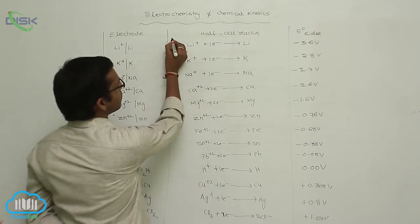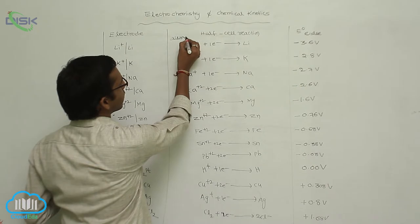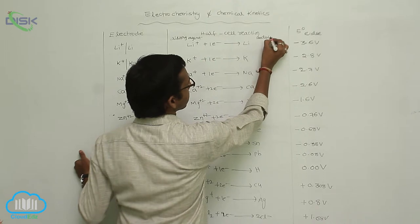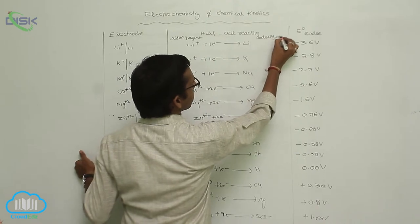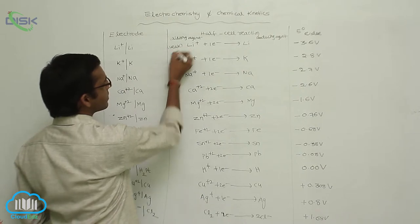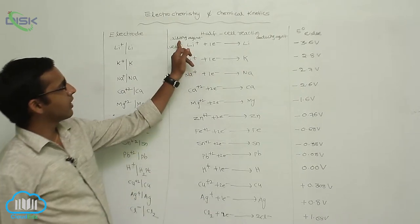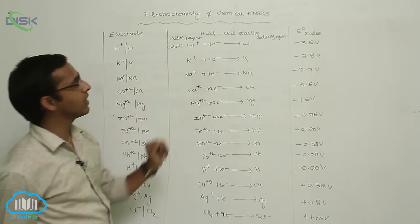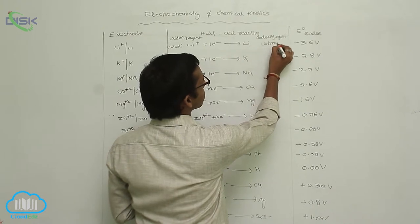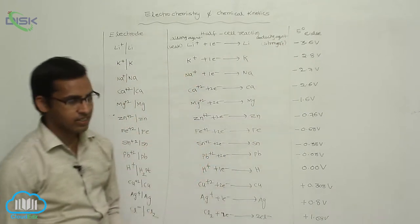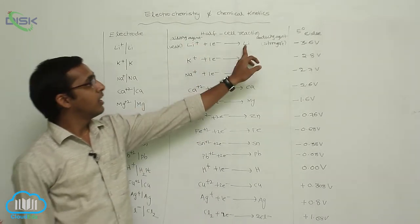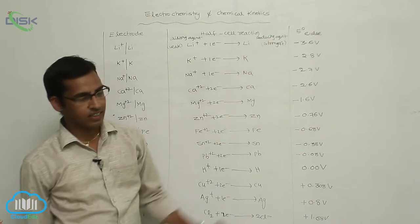Here, lithium is your oxidizing agent, and this is your reducing agent. Lithium metal acts as a weak oxidizing agent in the electrochemical series, but lithium also acts as the strongest reducing agent. Lithium metal is the weakest oxidizing agent and fluorine is the strongest oxidizing agent.